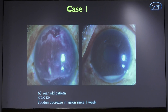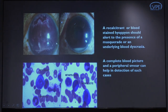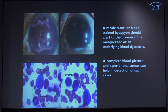This patient came to clinic as a known case of diabetes with sudden decrease of vision in the right eye for the last one week. The left eye had a hypopion, but the right eye presented with an intense blood-stained hypopion. A tap of this patient along with bone marrow analysis and peripheral smear revealed myeloblasts, band cells, and metamyelocytes. A recalcitrant or blood-stained hypopion should alert us to a masquerade or underlying blood dyscrasia. A simple complete blood picture and peripheral smear can help detect these cases.